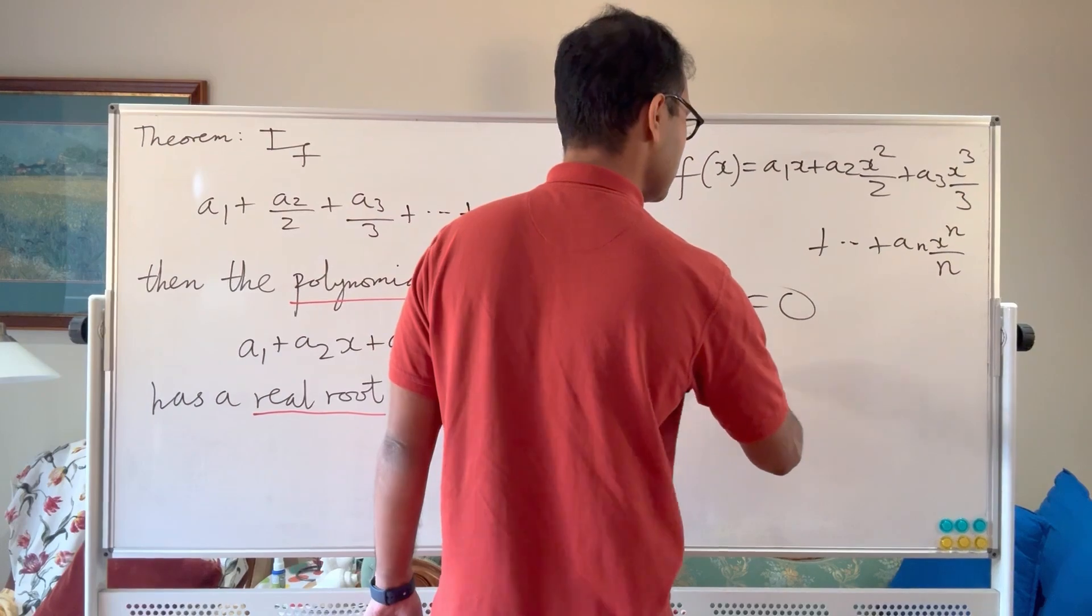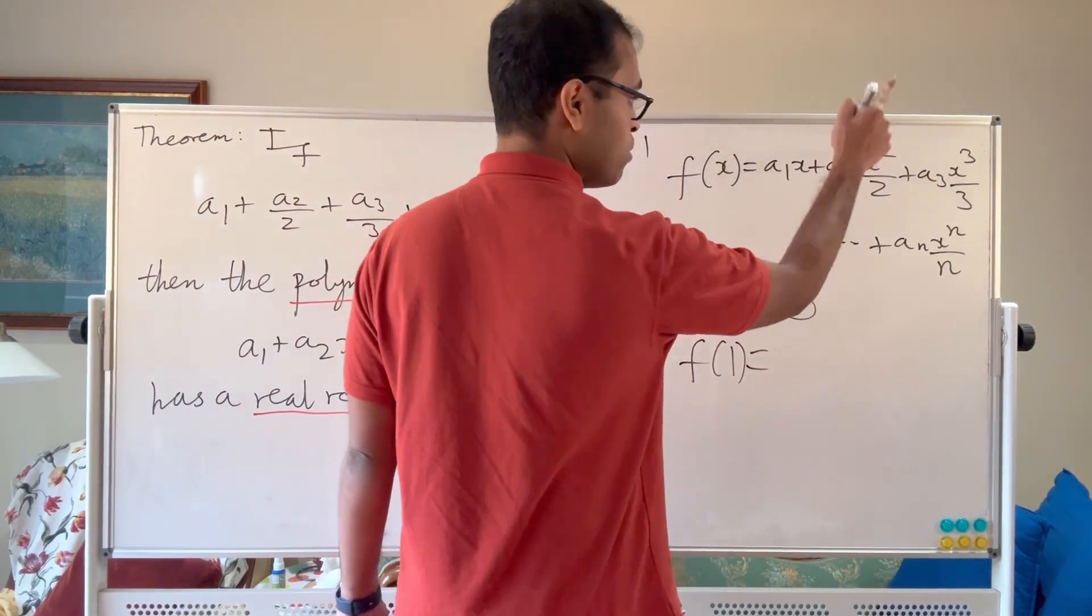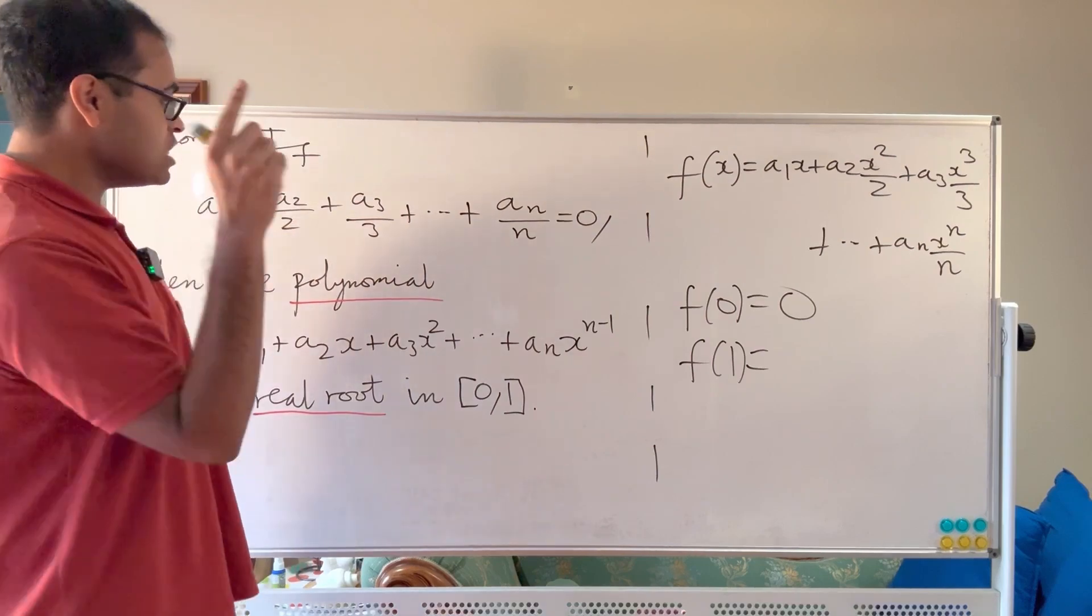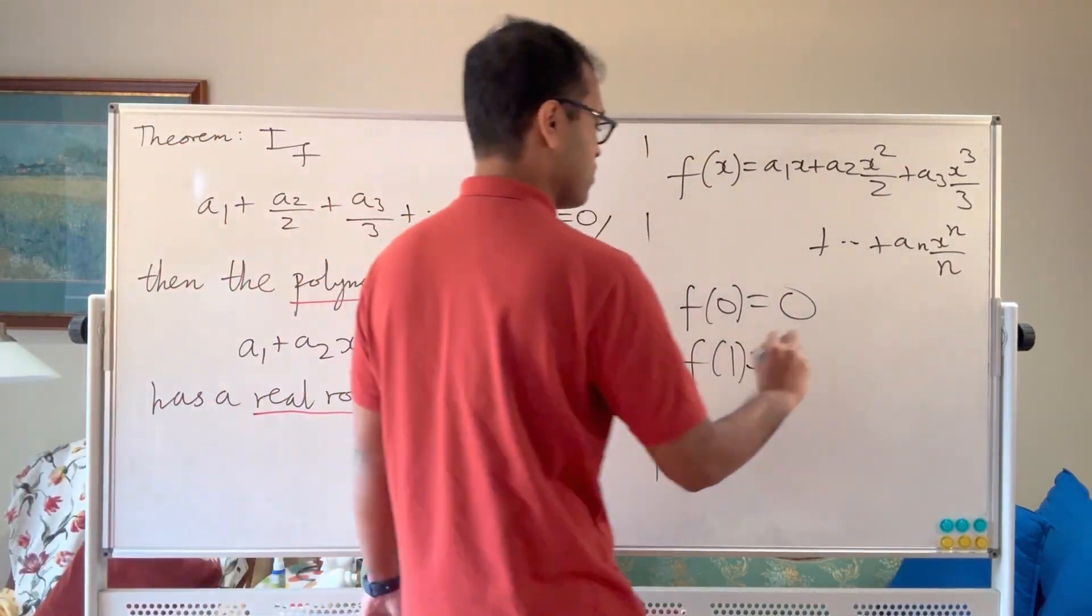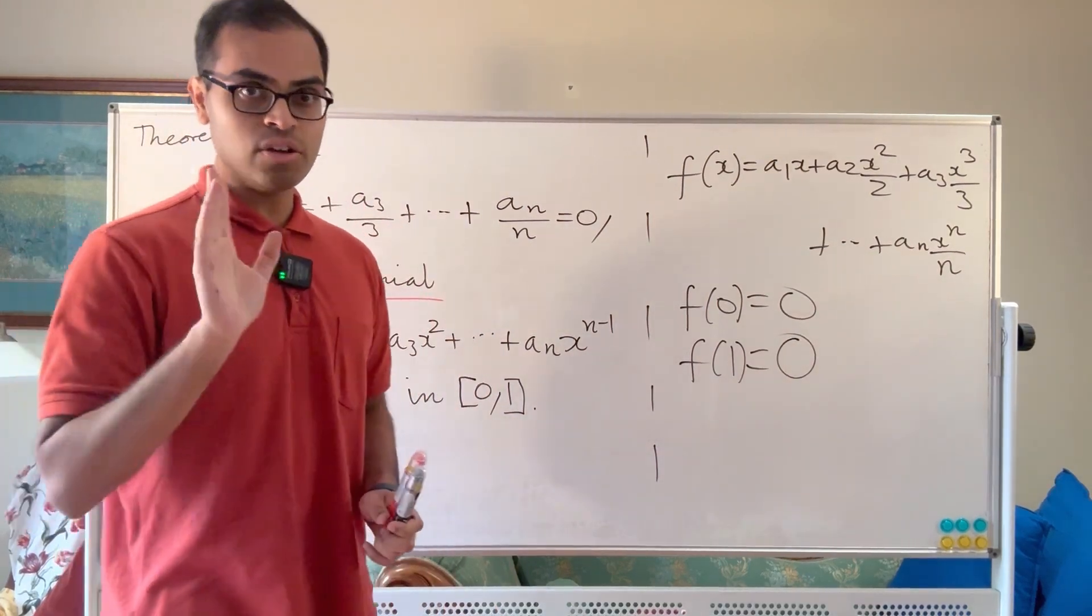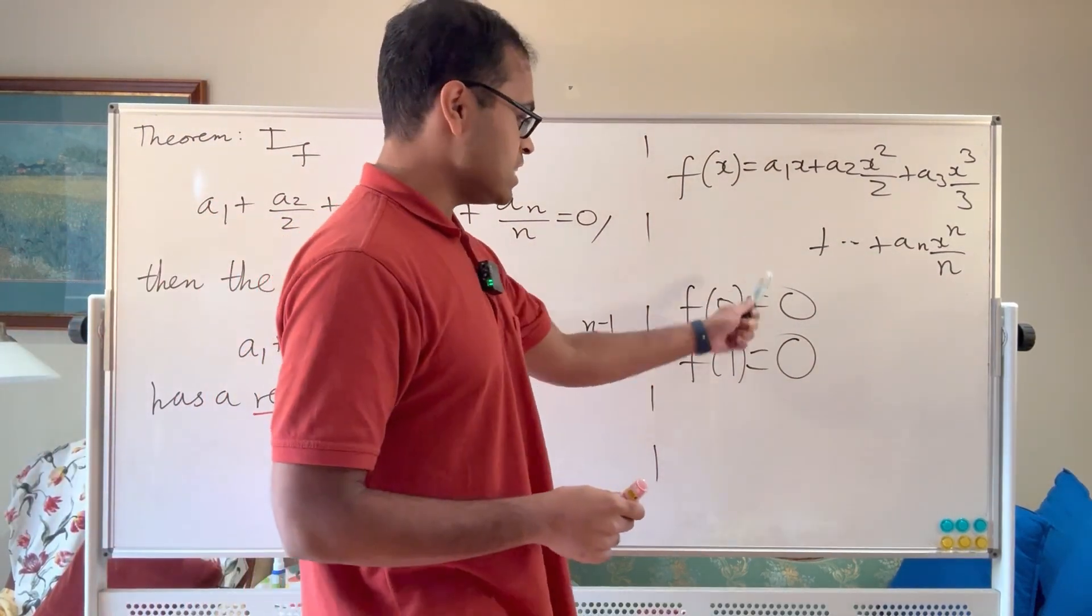We know f(1) is just going to equal a1 plus a2 over 2 plus a3 over 3 all the way up to an over n, which is just this quantity here. So that's where we constructed the function. f(1) is also equal to 0. So it's a differentiable function on the closed interval [0,1] and it has these two properties.